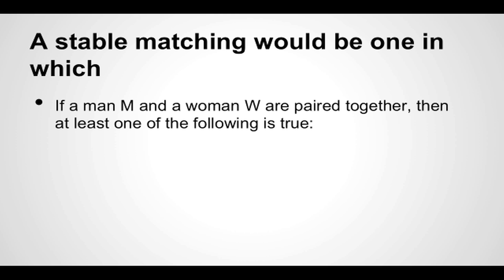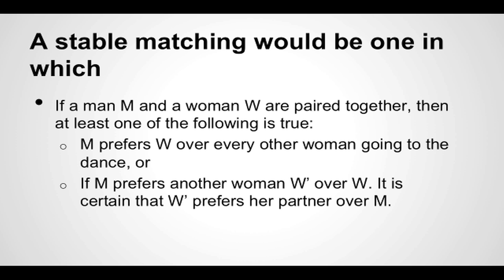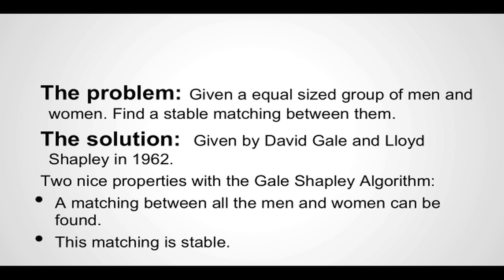So at least one of the following conditions is true for a stable matching: the man M prefers the woman W over every other woman going to the dance, or if M prefers another woman over W, then it is certain that she prefers her partner over M. There is no case where two people would prefer to be with each other over their current matching. So the problem was: given an equal-sized group of men and women, can we find a stable matching between them?